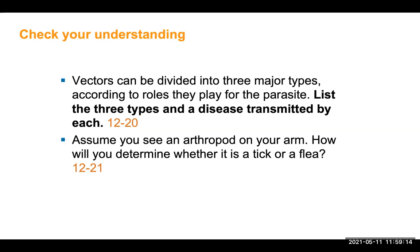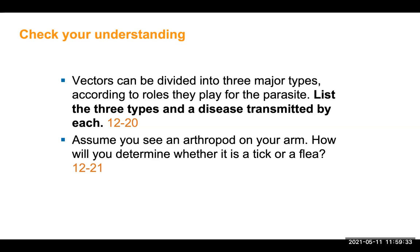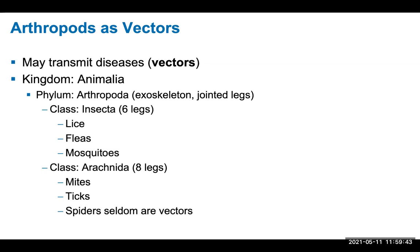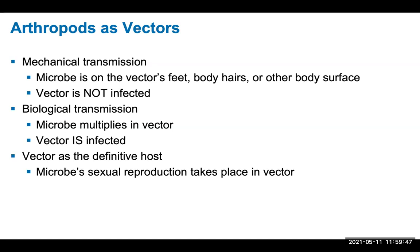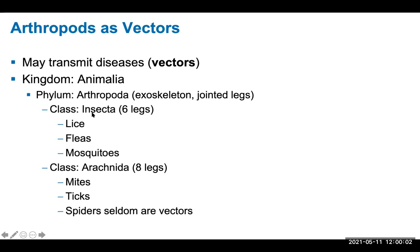Vectors as the definitive host means sexual reproduction of the microbe occurs in the vector. This can only apply with biological transmission but is not always the case. Check your understanding: the three types of vectors are mechanical, biological, and definitive host. Think about tick-borne, lice-borne, flea-borne, mosquito-borne, and mite-borne diseases you've learned about. If you see an arthropod on your arm, a flea has six legs while a tick has eight legs. Both insects and arachnids are arthropods, sharing an exoskeleton and jointed legs.